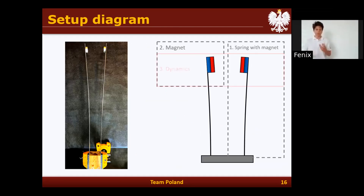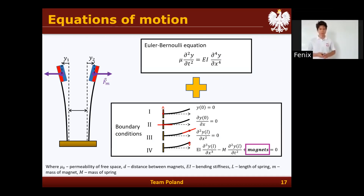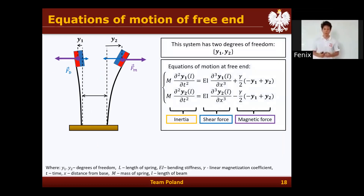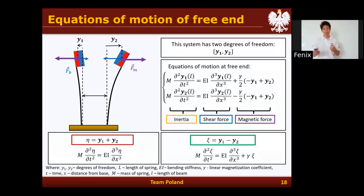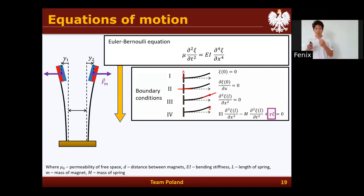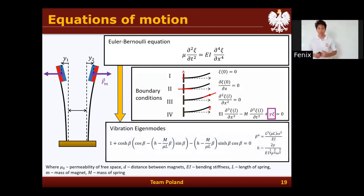Now, once we have the magnetic terms done, we can find the dynamics of the coupled system. To find the motion of the coupled system, we apply the boundary conditions again, but the fourth boundary condition will have a coupling term depending on the magnetic interactions. To find it, we write out the equations of motion of the free ends, knowing the system has two degrees of freedom, and we take into account the inertia, the shear force, and the magnetic force. By examining the sum and difference of these equations, we get the coupling term, which is proportional to the linearized magnetization. We apply this linearized magnetization coefficient to the fourth boundary condition and get our final vibration eigenmodes in the system.